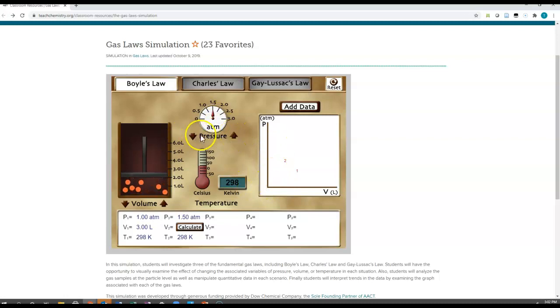These variables are related inversely. As I increase pressure, my volume goes down. If I decrease pressure, then my volume is going to go up.